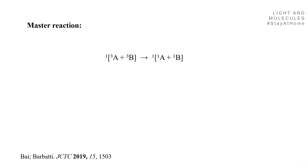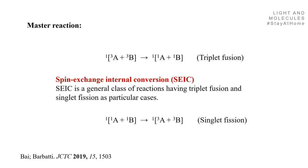The master reaction I want to talk about is this one. You have a complex of molecules A and B, each one in the triplet state. After some time, this changes through internal conversion into A and B, each one in a singlet state. This process is a triplet fusion and is a spin exchange internal conversion — a general class of reactions having triplet fusion and singlet fission as particular cases.